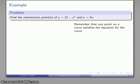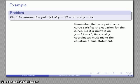Now a very important idea to keep in mind is that any point on the graph of a curve has to satisfy the equation for the curve. So if a point is on the graph y equals 12 minus x squared, whatever the x and y coordinates are have to make the statement y equals 12 minus x squared a true statement.